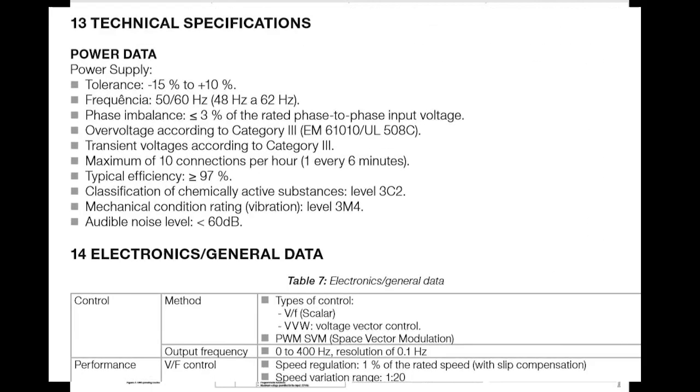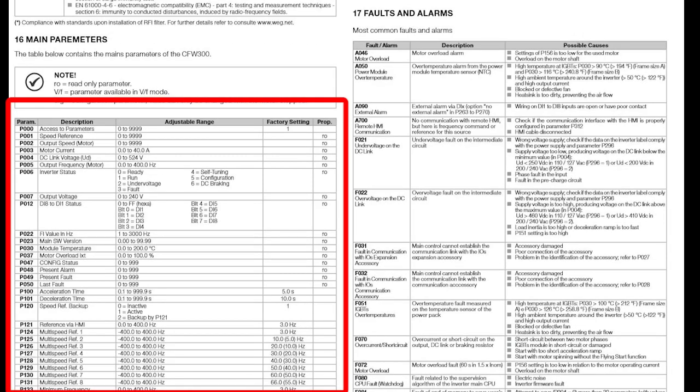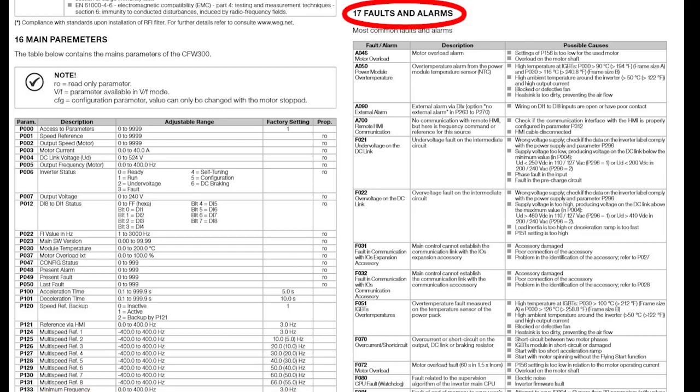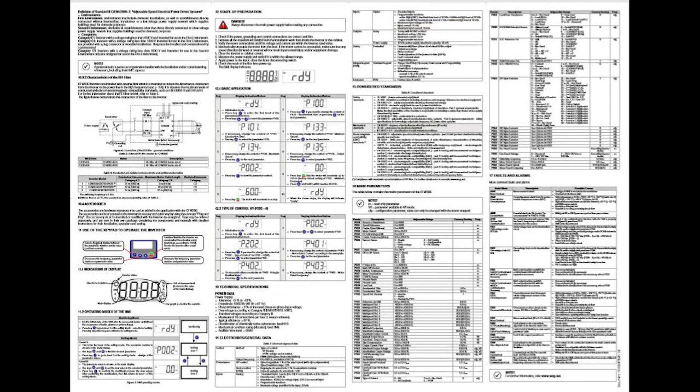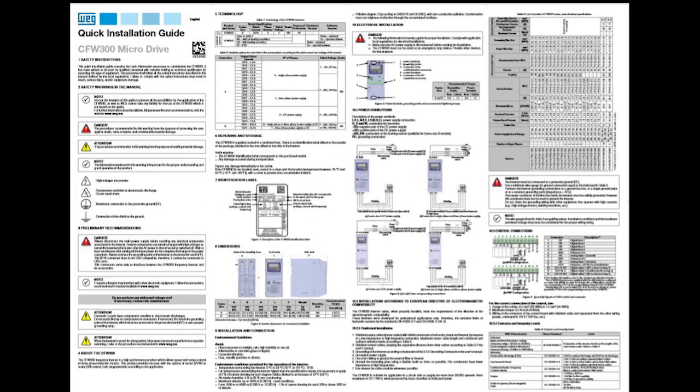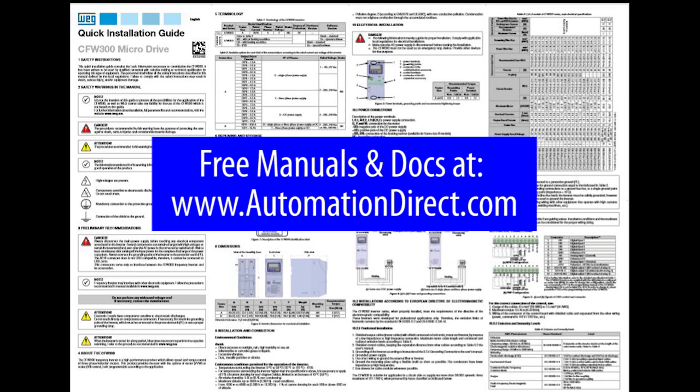There's technical specs, a list of the most common parameters, I love that, and a list of the most common fault and alarm codes. So definitely grab that little plastic bag and put it some place safe. If you do lose it, then you can always download it and all of the user manuals for free from the AutomationDirect.com website.